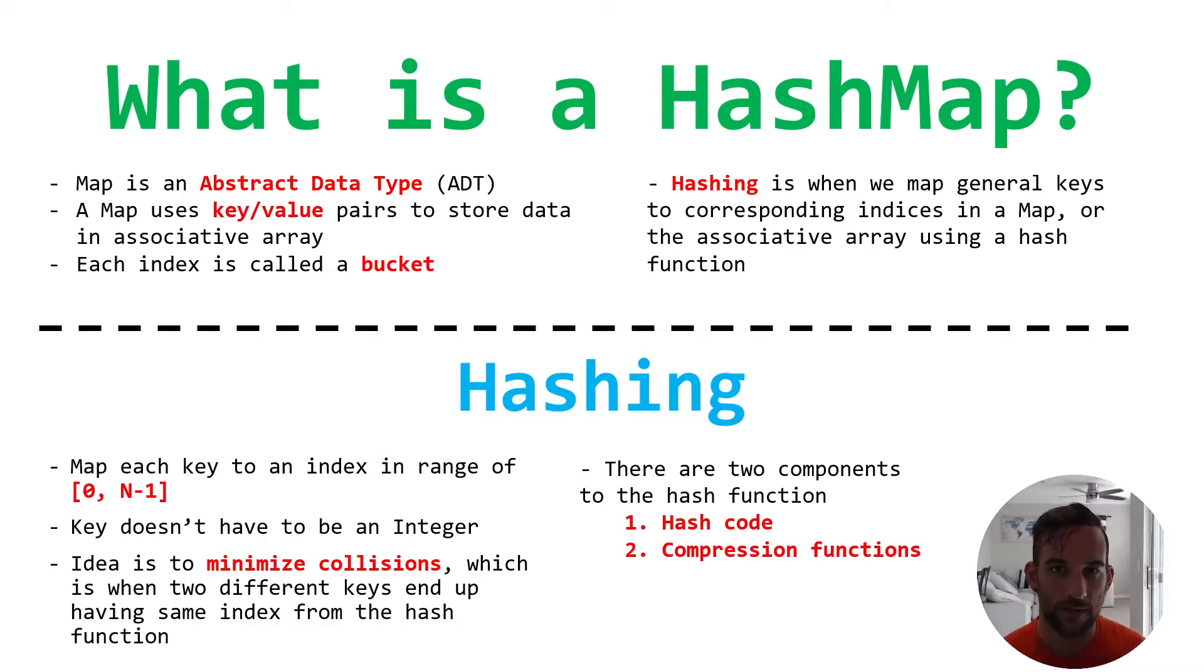If we have two different keys that go through the hash function, which we'll talk about, and returns an integer, well, that integer becomes the index in the associative array. Well, if two different keys come out with the same index, that means we're trying to put them into the same bucket in the array. That's called a collision. And we'll get into that.